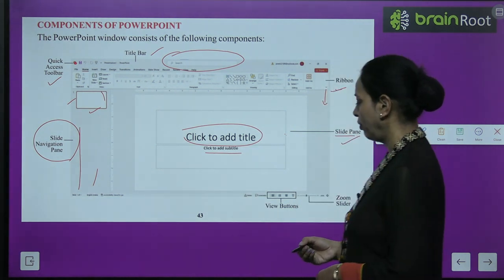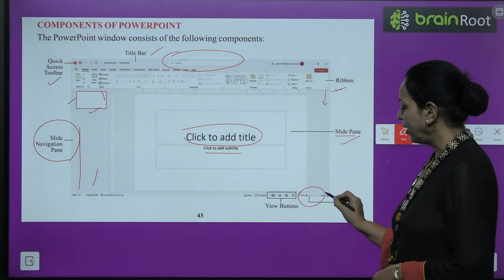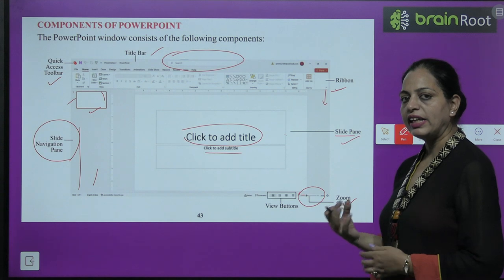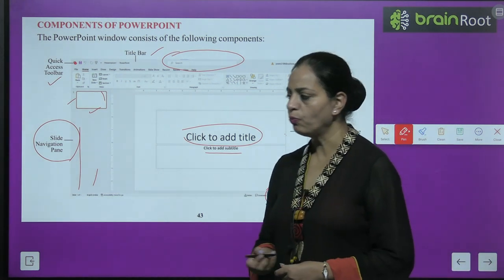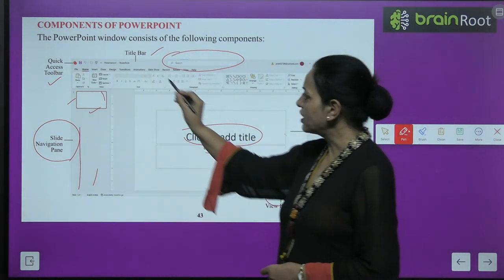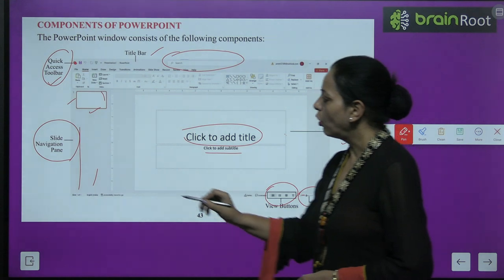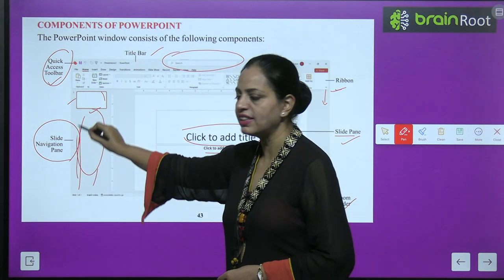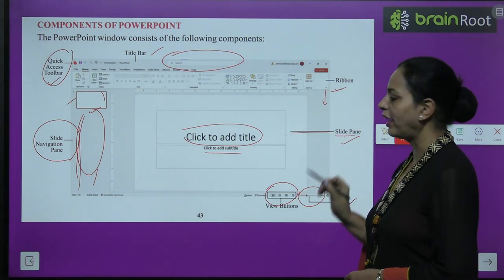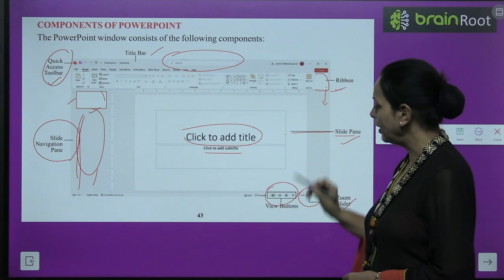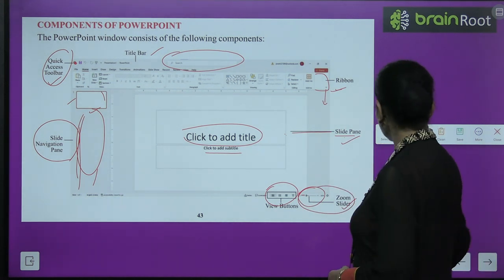At the bottom you can see the Zoom Slider, and next to it are the View Buttons. The Title Bar displays the name of the presentation, the Quick Access Toolbar is at the top left, the Slide Navigation Pane shows all slides, the Ribbon is the tab area, and the Slide Pane shows the current slide in the center.